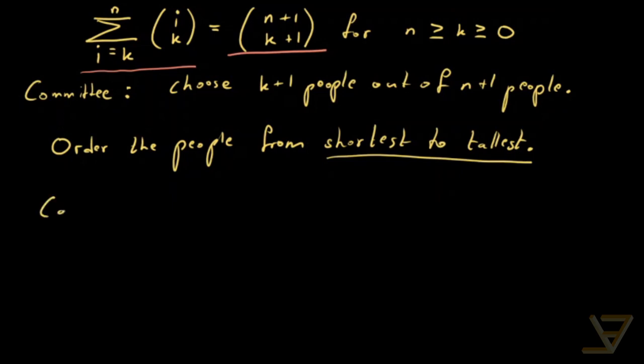So now what we do is case work. Case work on the tallest person chosen. Now this tallest person, let's say it's the person i plus one for some index i. We'll put bounds on the index in just a moment.